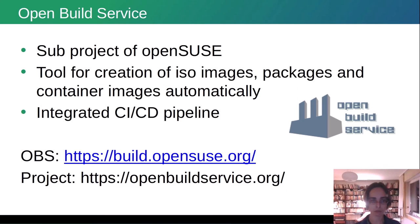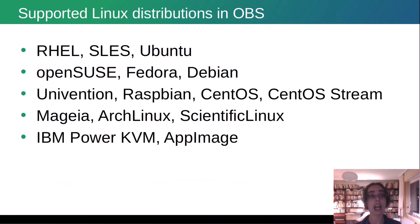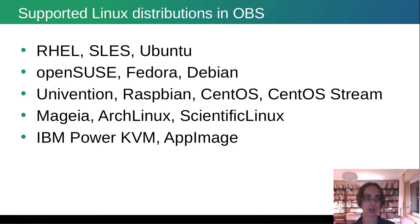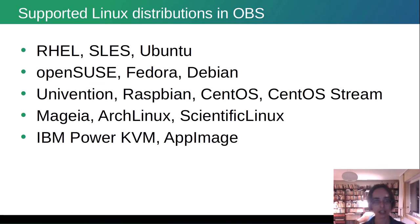The documentation is available and you can use and test it. Our supported Linux distributions in OBS reflect the Open Source Way — we don't support only OpenSUSE and SLES. We support multiple Linux distributions: RHEL, Ubuntu, Fedora, OpenSUSE, Debian, Univention, Raspbian, CentOS, CentOS Stream, Mageia, Arch Linux, and Scientific Linux. Besides that, we have special build types — you can also build for IBM Power, KVM, and AppImage.